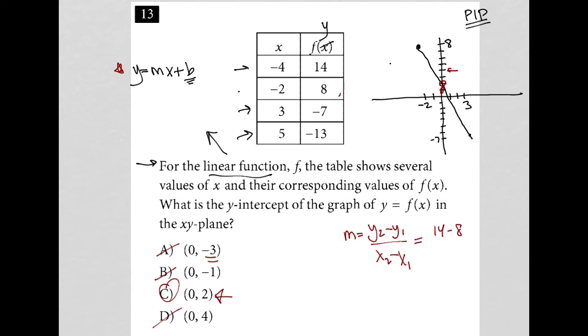And that would be over negative 4 minus negative 2, right? This x value minus this x value. And what I'd be left with is 6 over negative 4 plus 2, which is negative 2, which is then negative 3. So my slope would equal negative 3.